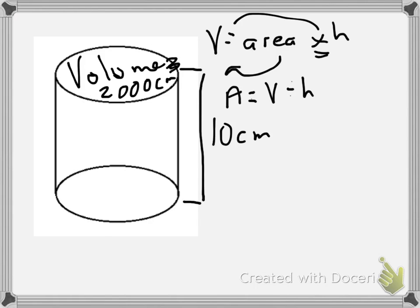So let's take a quick look at how this works. I'll plug in my numbers over here. Area is going to be equal to 2,000 divided by height, which is 10. So our area is going to equal 200.